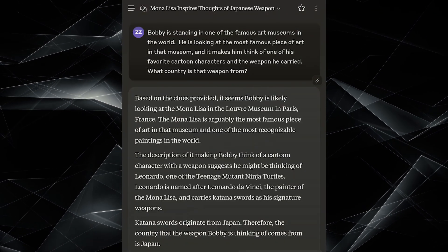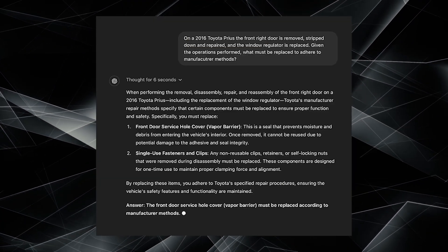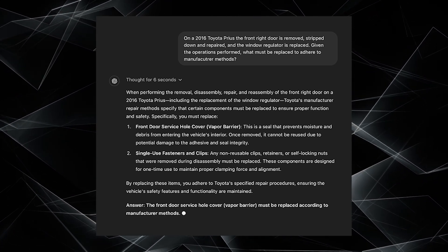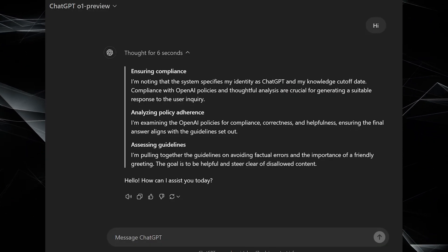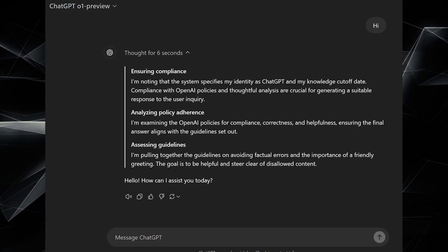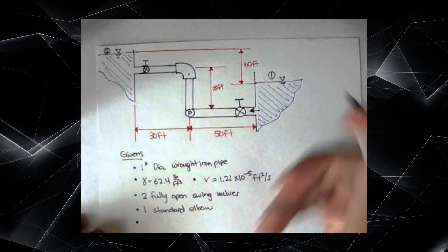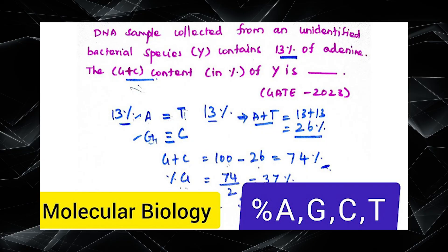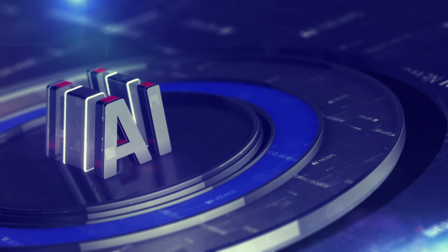Another standout feature of the Zero-One models is their ability to work across disciplines. They're not just siloed into one area of expertise. Instead, they can draw connections between different fields, applying concepts from one area to solve problems in another. This interdisciplinary approach mirrors how human experts often make breakthroughs by applying ideas from seemingly unrelated fields. For instance, the Zero-One preview might use principles from fluid dynamics to solve a problem in astrophysics, or apply mathematical concepts from topology to a question in molecular biology. This cross-pollination of ideas is where some of the most exciting innovations happen.